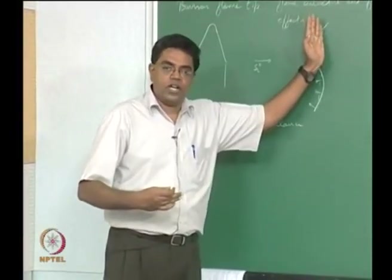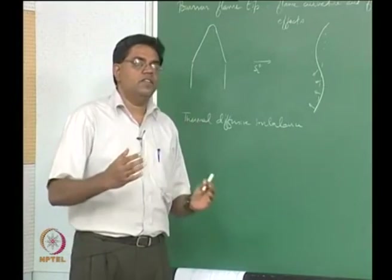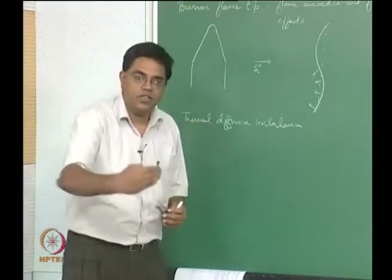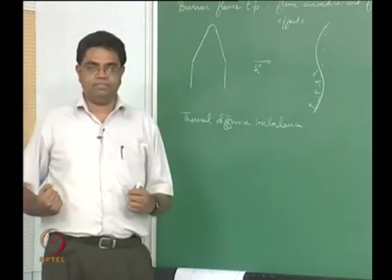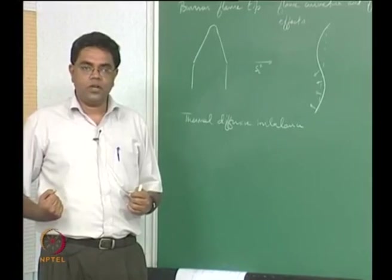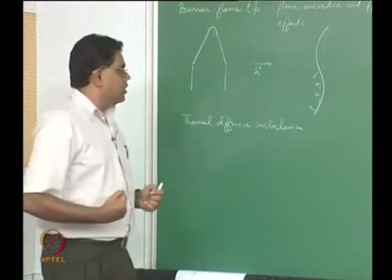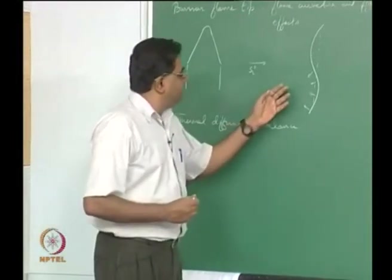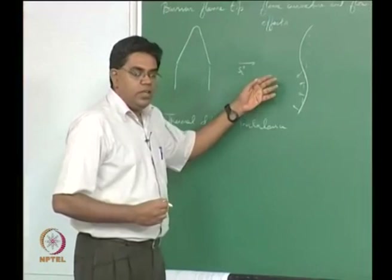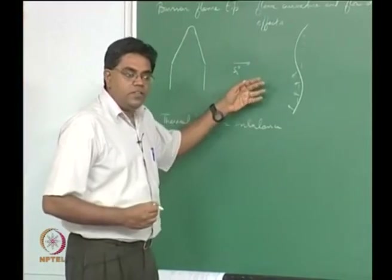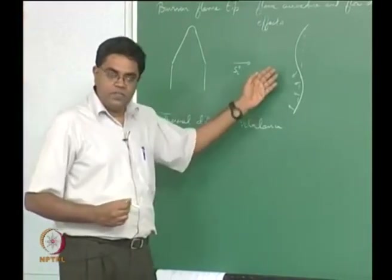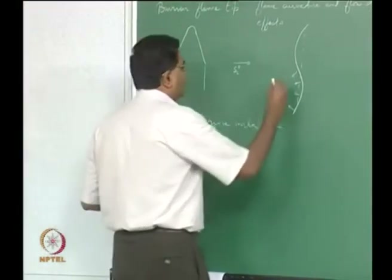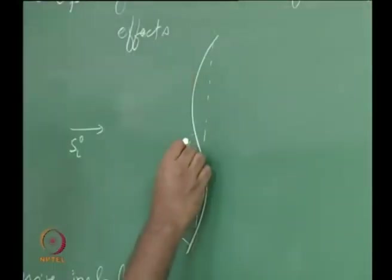The heat conduction now becomes multi-dimensional, and therefore you are actually heating the reactants significantly more than if the flame were planar. This should give rise to a tendency for the flame speed to increase. On the other hand, look at what is happening to the species diffusion — the species diffusion is going to actually go radially outward.